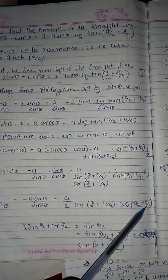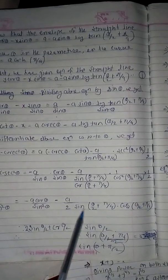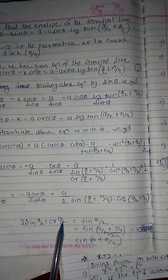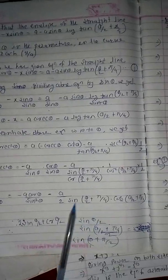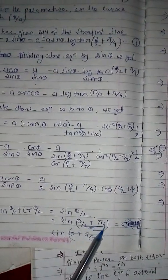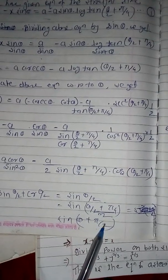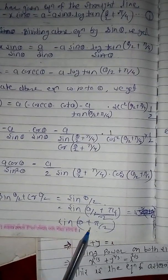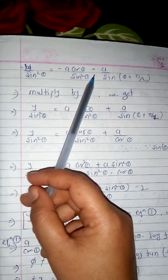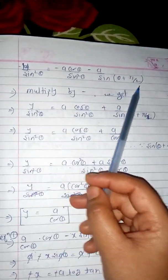Applying the formula 2·sin(A)·cos(A) = sin(2A), we get 2·sin(θ/2 + π/4)·cos(θ/2 + π/4) = sin(θ + π/2). Substituting, −y·sin²θ = −a·cos θ/sin²θ... wait, simplifying: −y·sin²θ = −a·cos θ/sin²θ − a/sin(θ + π/2).